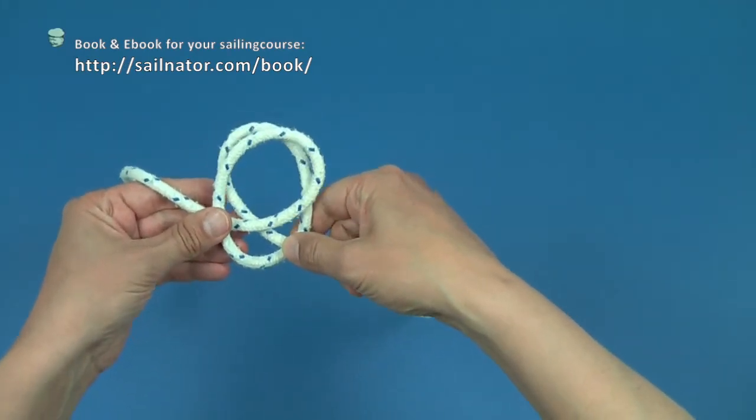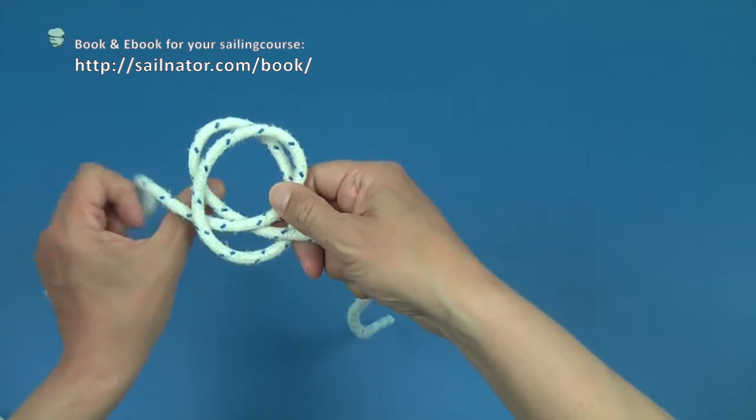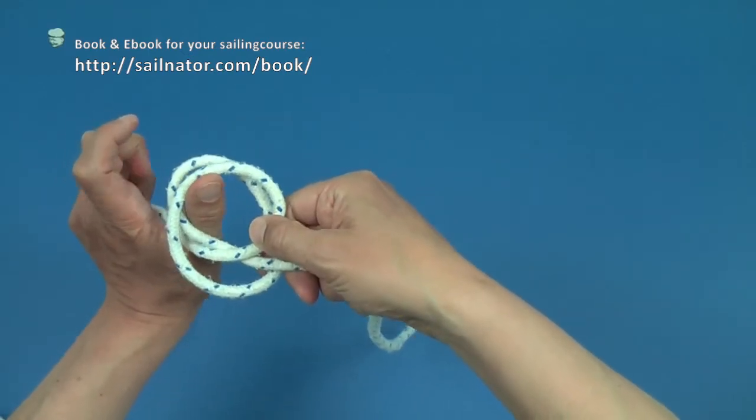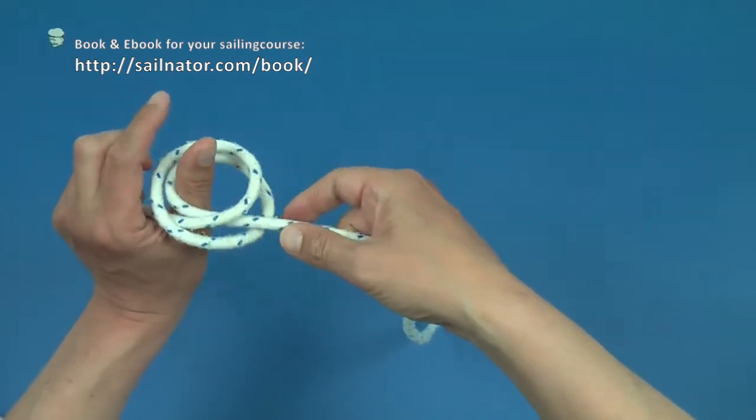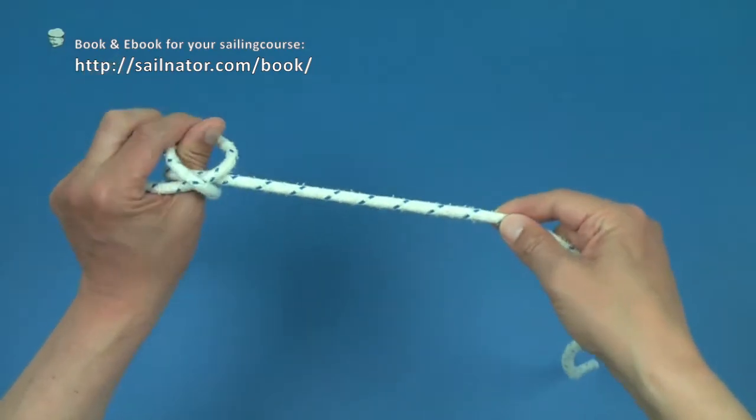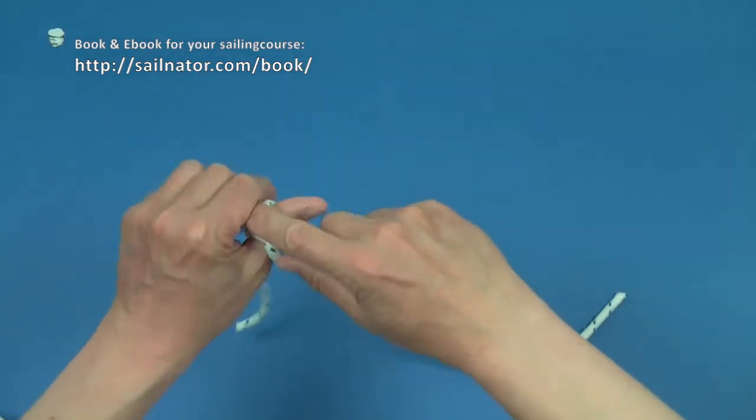I put both loops that are lying one on the other over my thumb, which serves as the post or the tiller. I pull on both parts of the line now and the laid clove hitch is finished.